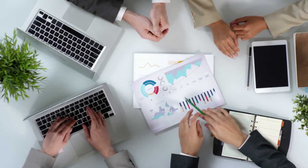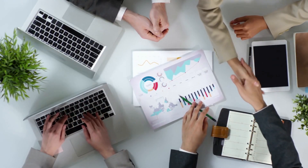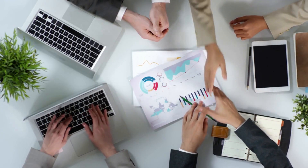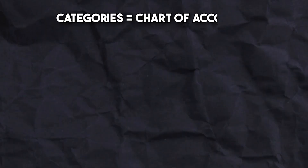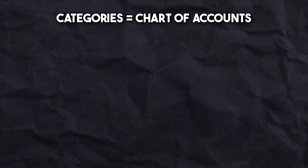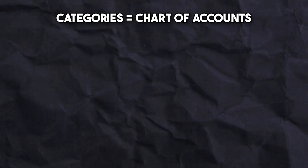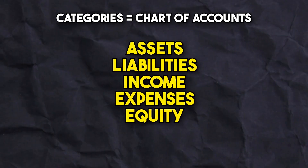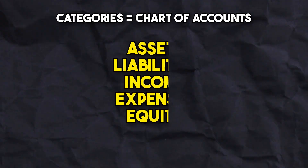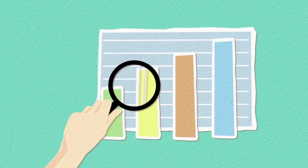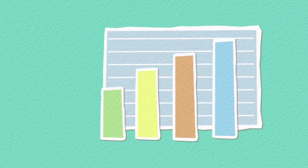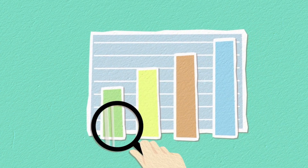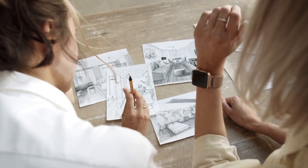Once these features have been optimized, we can now start creating categories specific to your interior design business. These categories are what we call the chart of accounts and they'll fall into one of five categories: assets, liabilities, income, expenses, and equity accounts. By tailoring these categories to reflect the workflow and transactions unique to your business, you can create a clear financial picture.